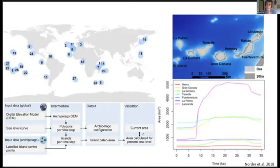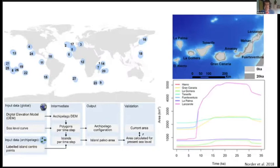They published a dataset for 200 islands across the globe showing how they changed over time. Max already showed there are different sea levels you might use — they used two: Lombach et al. and Cutler et al. If you download the script, you can use any sea level curve you'd like; if you have a local sea level curve, use that one. They show an example for Fuerteventura and Lanzarote in the Canary Islands: for example, Tenerife is the largest island today, but during the last glacial maximum that was reversed. With this script you can calculate these curves and maps for all islands across the globe, and they are now working on an R package to make it easier to use.